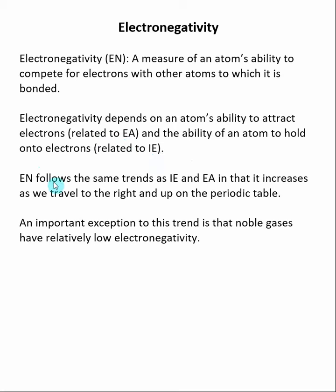The periodic trend of electronegativity follows the same trend as ionization energy and electron affinity, in that it increases as we travel to the right and go up on the periodic table.